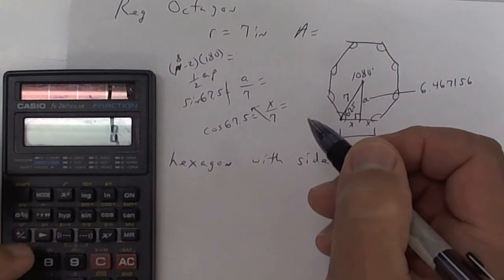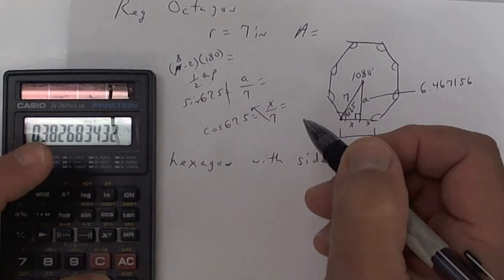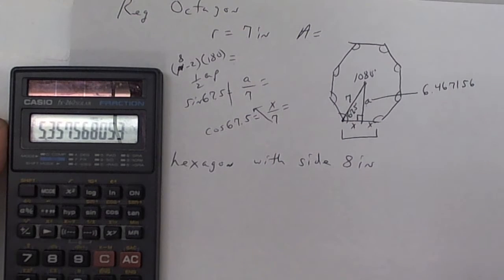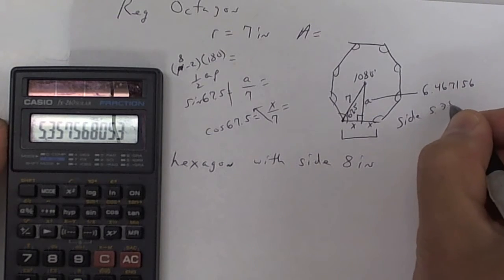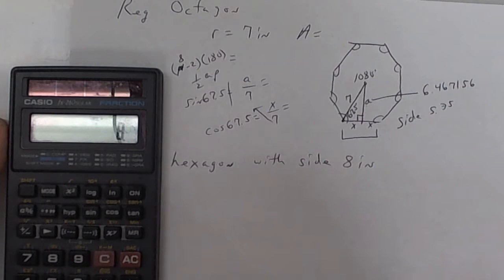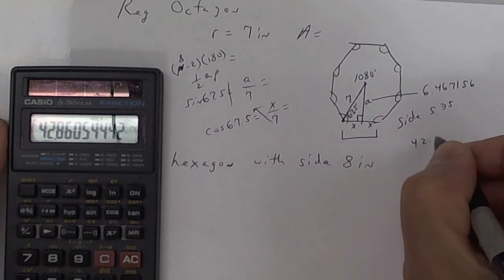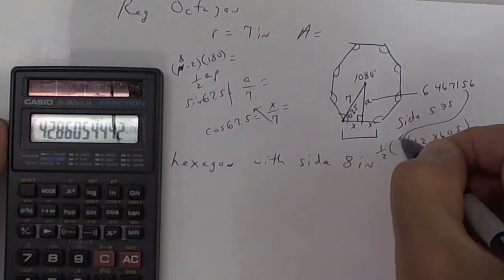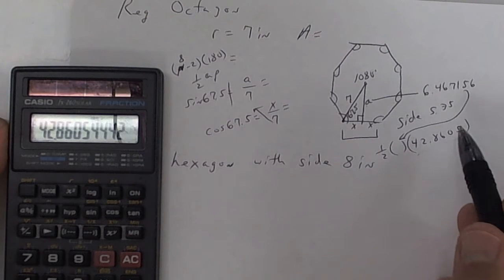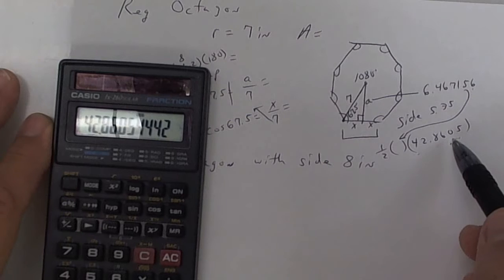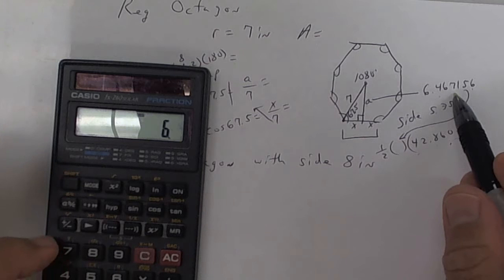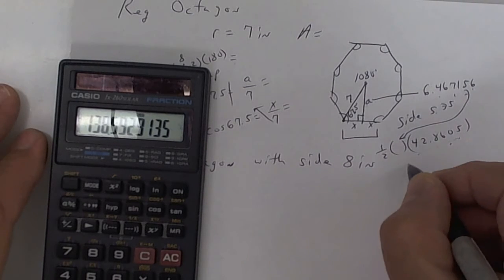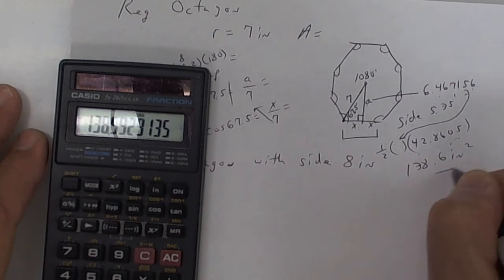Multiply x by two to get the side — the side is approximately 5.35. Multiply by eight because there's eight of them to get the perimeter, so the perimeter is 42.8605. The formula is one half the apothem times the perimeter. I already have all of this in my calculator, so I'll do perimeter times apothem 6.4671 56, press equals, then divide by two. The area of this one is 138.6 square inches. You've got to memorize those two formulas.